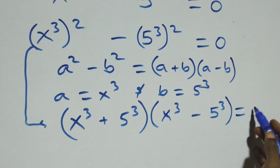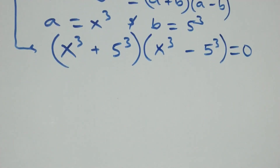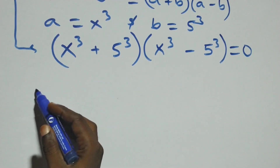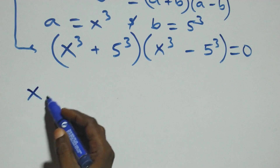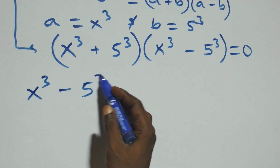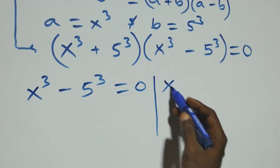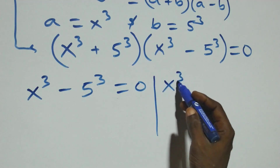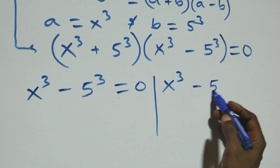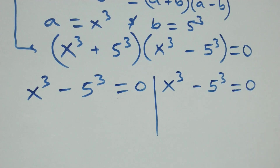From here the next step, we have two possible cases. The first one: x raised to power 3 plus 5 raised to power 3 equals zero, or we have x raised to power 3 minus 5 raised to power 3 equals zero.